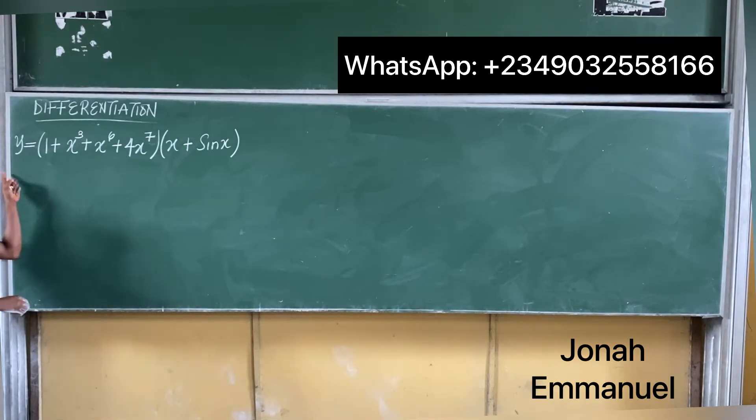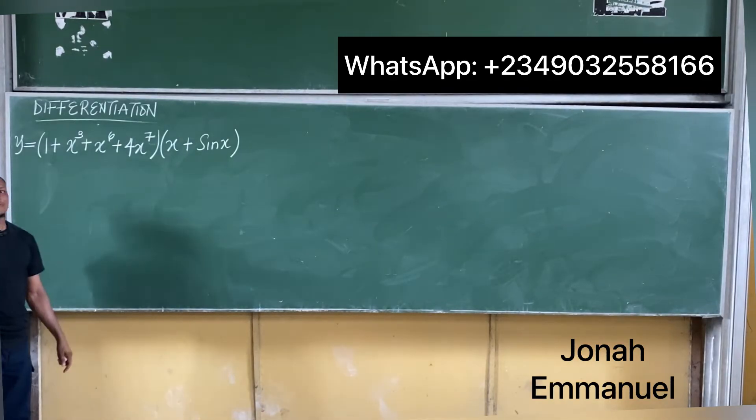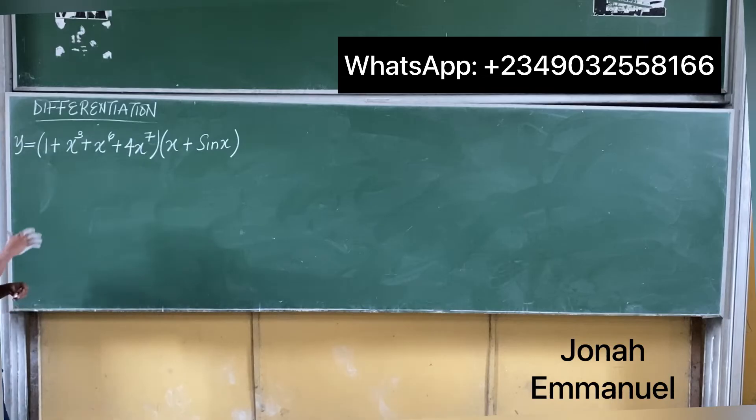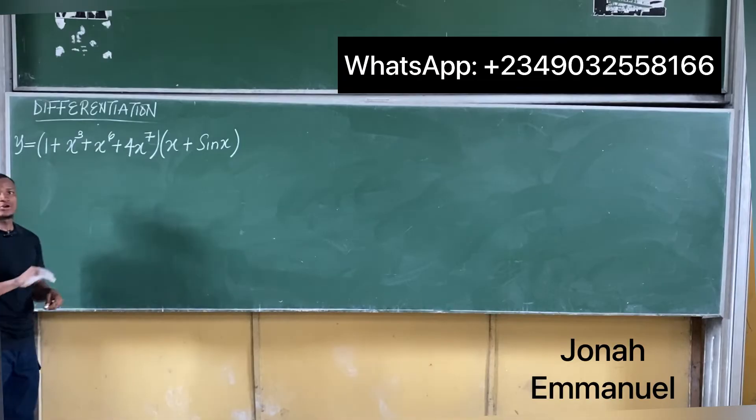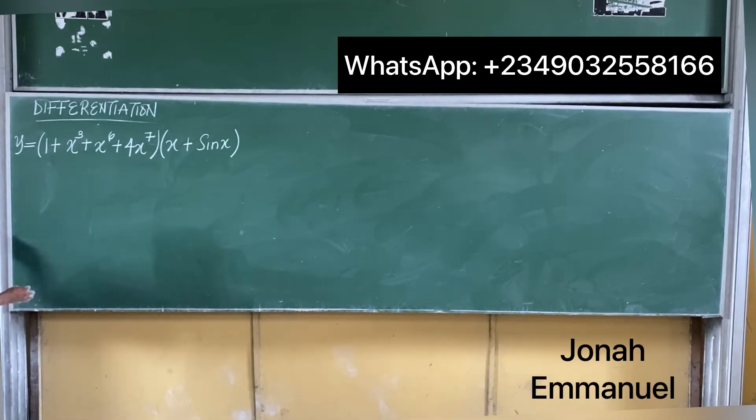Let's start. Y is equal to this. Find dy/dx here. Obviously this is a product rule question because this is multiplying this, so it becomes a product. For this product, what next?